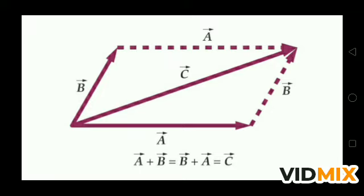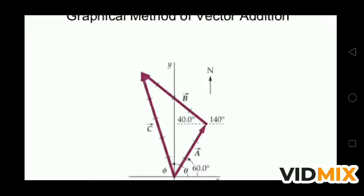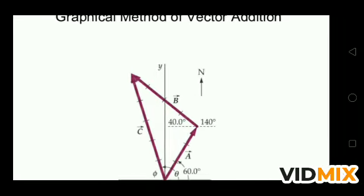So A plus B equals B plus A, which equals C. This is the way to add vectors via the parallelogram law. For example, if vector A is at 60 degrees from the x-axis and is shifted to 140 degrees, vector B is placed with its tail at the arrowhead of A. The result C is the resultant of A and B, and its direction is at angle theta from the origin where vector A started.